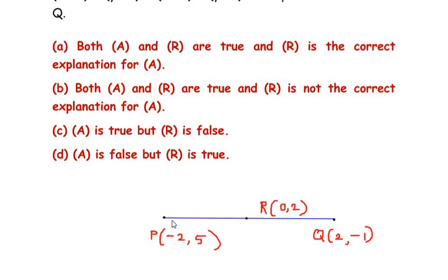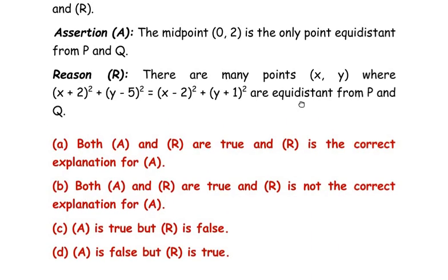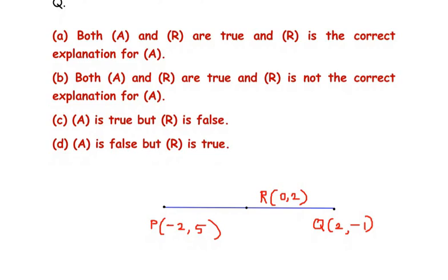I have drawn the two points P(−2, 5) and Q(2, −1), and R is the midpoint — the point at the center of the line joining them — with coordinates (0, 2). According to the Assertion, R is the only point equidistant from P and Q. Equidistant means if R is, say, 2 units from P, it is also 2 units from Q. Let's check by drawing a straight line passing through the midpoint.